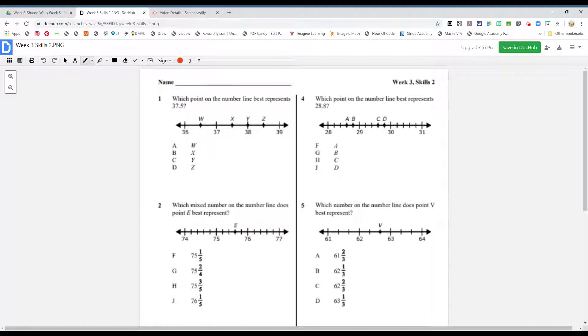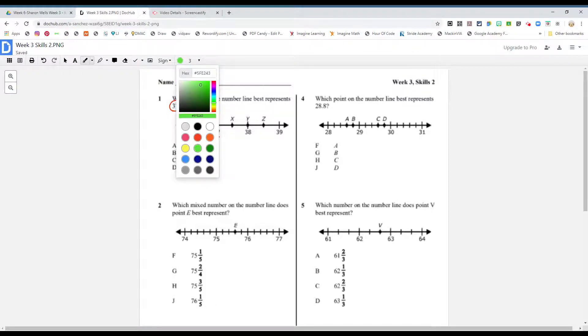Alright, so the first one boys and girls is asking for, let's see, which point on the number line best represents 37.5, 37 and 5 tenths. So we can see here boys and girls, we got a whole number 36 and a whole number 37. There's something in between. Okay, so we are looking for a 37.5.